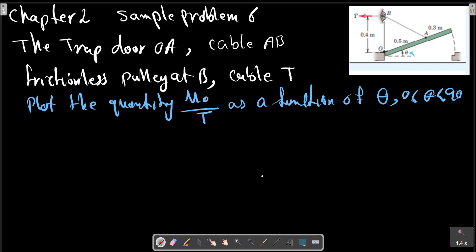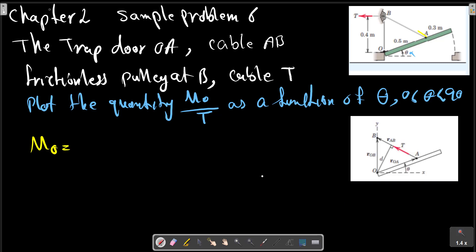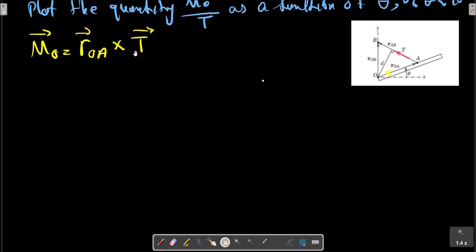First, we are going to calculate MO. MO is equal to the tension T. Considering the picture for more description, MO equals R_OA multiplied by T.